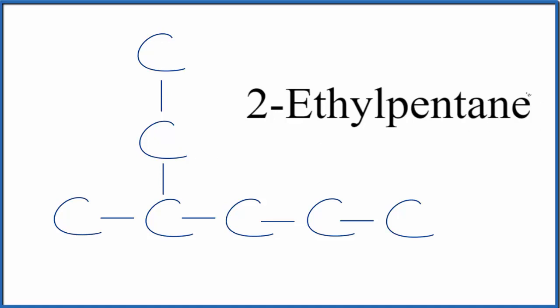The problem is that when we say the longest chain is pentane, the 1, 2, 3, 4, 5, there's actually a little bit longer chain we can have here. If we start here, we could go 1, 2, 3, 4, 5, 6. So the longest chain really is hexane. We have 6 carbons.